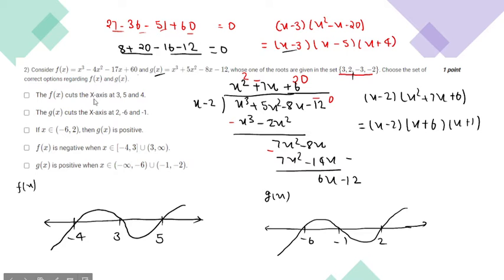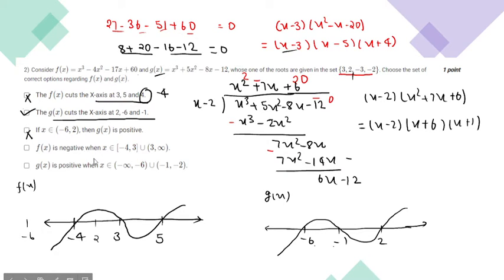Moving to the options: the first option says f(x) cuts the x-axis at 3, 5, 4 — but it actually cuts at minus 4, so this is incorrect. The second statement says g(x) cuts the x-axis at 2, minus 6, minus 1 — that is correct. The third statement about g(x) being positive on minus 6 to 2 is not correct. The fourth option about f(x) being negative including minus 4 is incorrect. The fifth statement about g(x) being positive is also incorrect. So for question 2, only the second statement is correct.